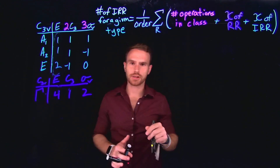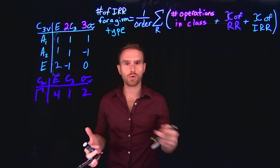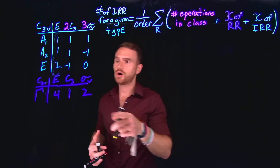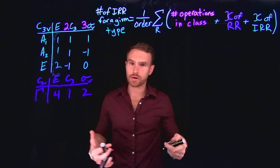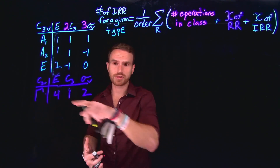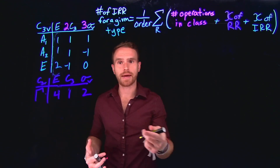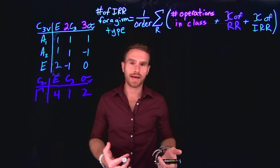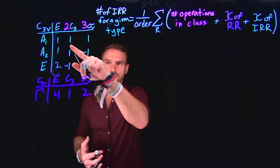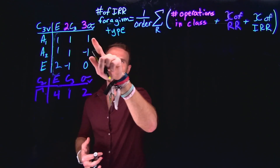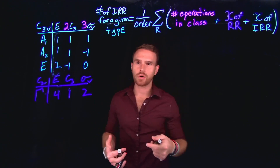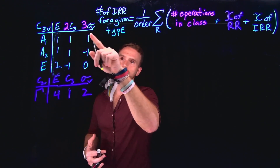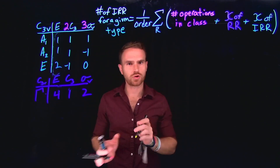This reducible representation has characters of 4, 1, and 2 corresponding to the classes or symmetry operations E, C3, and sigma V respectively. So these values are the character or chi of our reducible representation. This reducible representation is actually made up of the irreducible representations given by the Mulliken symbols A1, A2, and E. The character of these irreducible representations are the numerical values contained inside of our character table. The number of operations for a given class are going to be the coefficients in front of each of those classes or symmetry operations — those terms are used interchangeably.